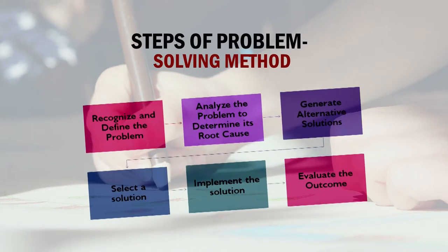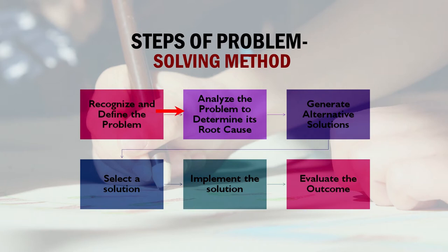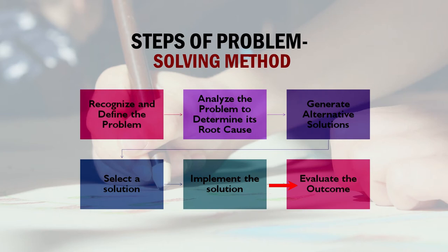Short, immediate, or temporary solutions are not the outcome of problem-solving instructions; learners try to devise a permanent solution to the problem. What are the steps of the problem-solving method? There are basically six steps: first, recognize and define the problem; second, analyze the problem to determine its root cause; third, generate alternative solutions; fourth, select the most appropriate solution; fifth, implement the solution; and sixth, evaluate whether the solution being implemented is solving the problem — that is, evaluate the outcome of implementation.